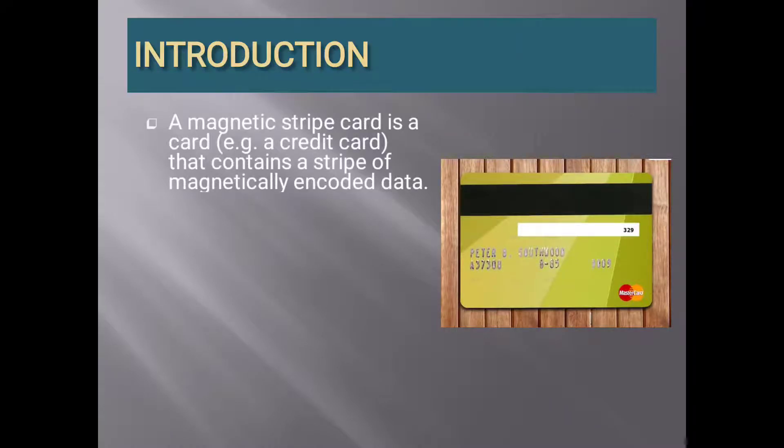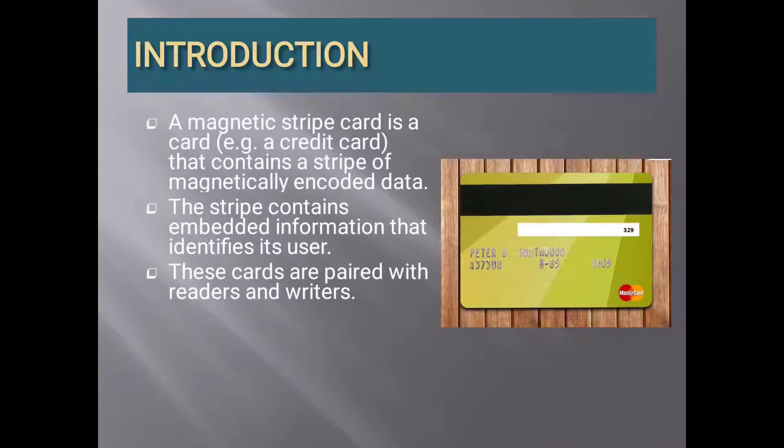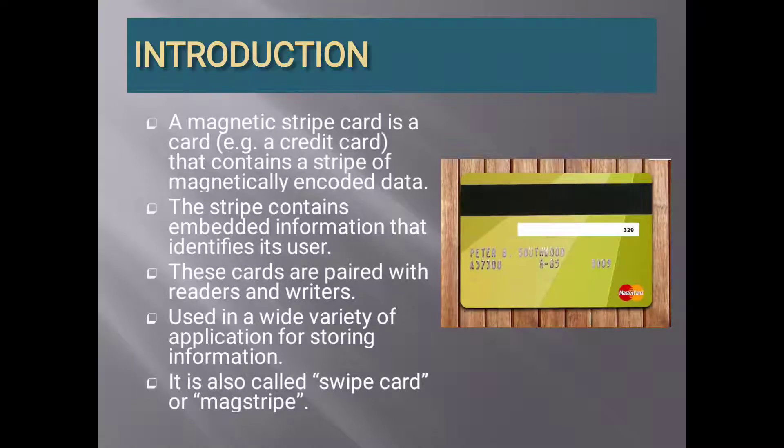A magnetic stripe card is a card that contains a stripe of magnetically encoded data. As in the picture, we see a card, there is a thin black line on the card, it is called stripe. It is made up of magnets. The stripe contains embedded information that identifies its user. These cards are paired with readers and writers. When the card is swiped through the machine, the machine reads the data on the stripe. Used in a wide variety of applications for storing information. It is also called swipe card or mag stripe.